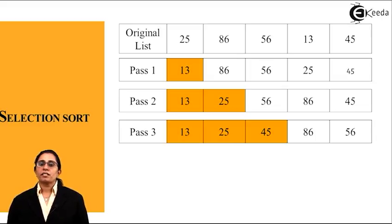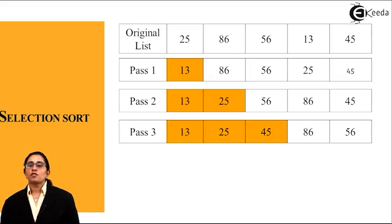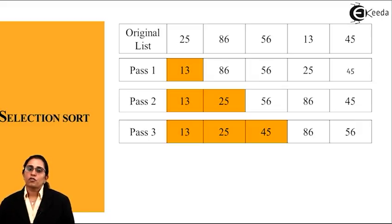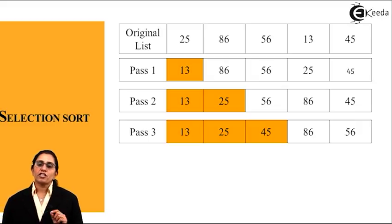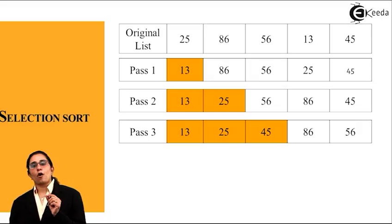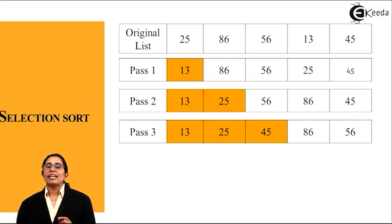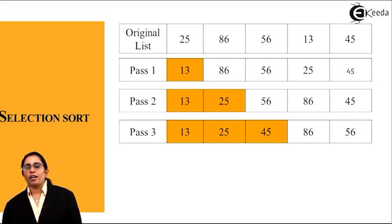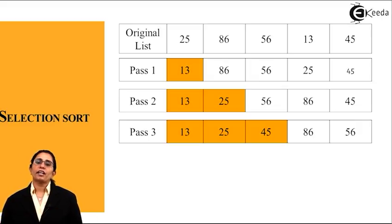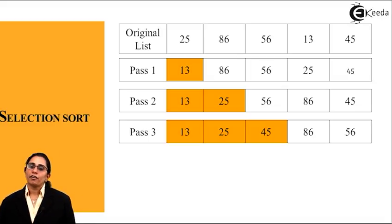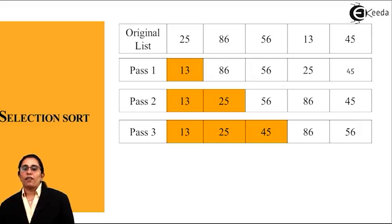In pass 3, 13 and 25 are already sorted and fixed. Starting from 56, we compare and find that 45 is the minimum among 86 and 45. We swap 45 and 56. The result is: 13, 25, 45, 86, 56.